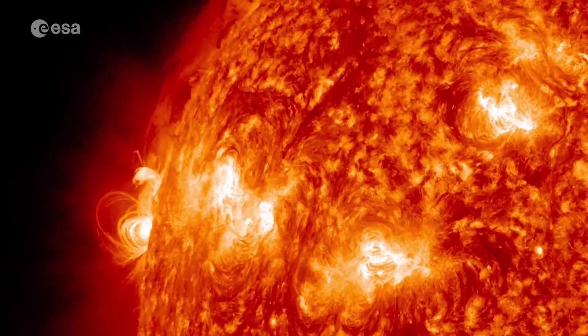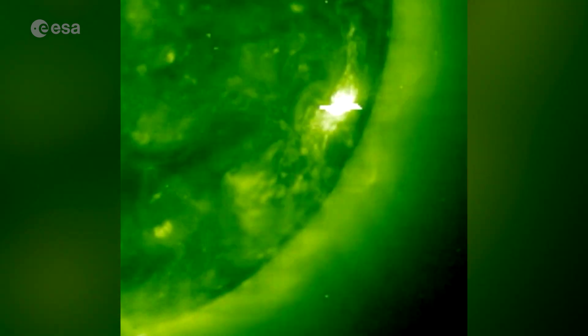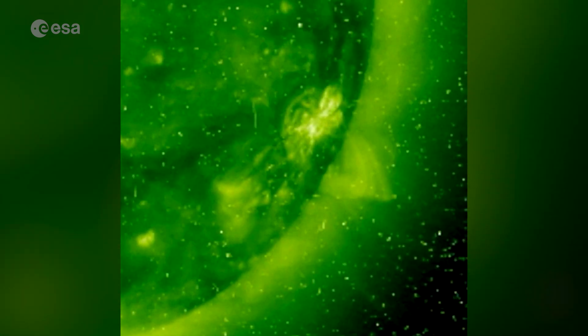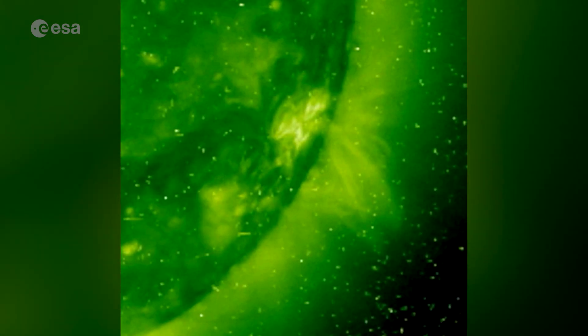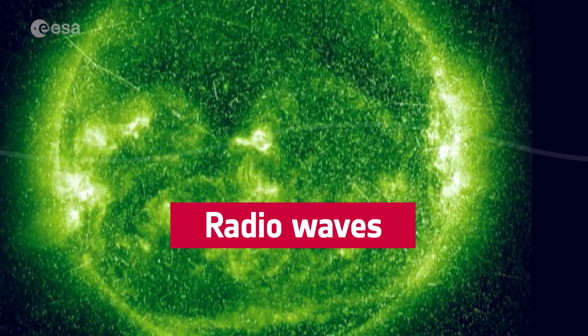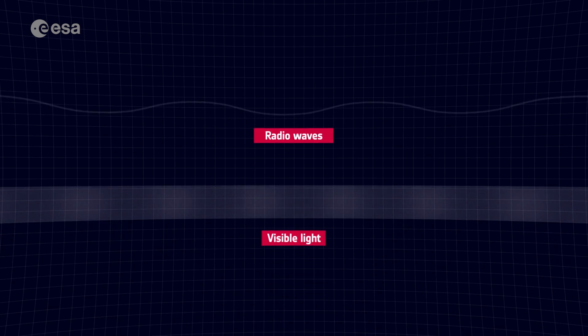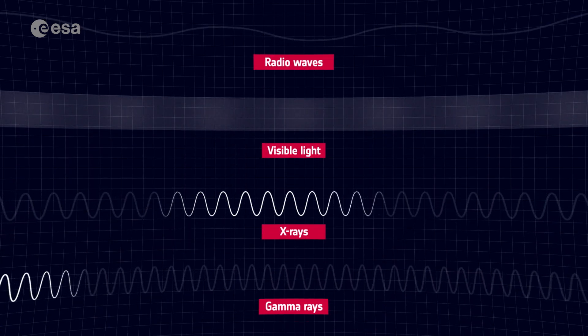Sunspots and active regions, dark patches on the solar surface, can erupt with solar flares that release tens of millions of times more energy than a volcanic eruption on Earth. Flares emit energy across the electromagnetic spectrum, from low-frequency radio waves to visible light, up to high-energy X-rays and gamma rays.